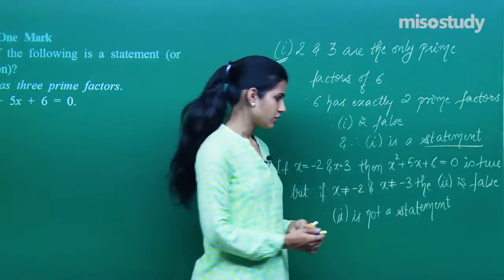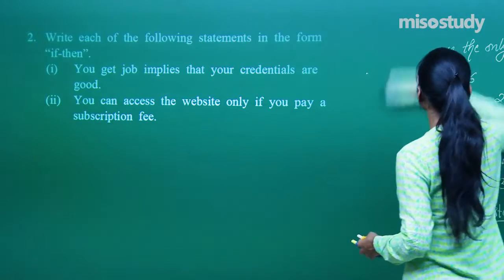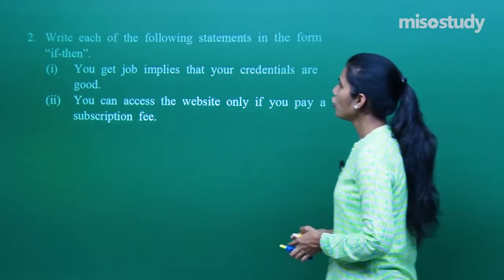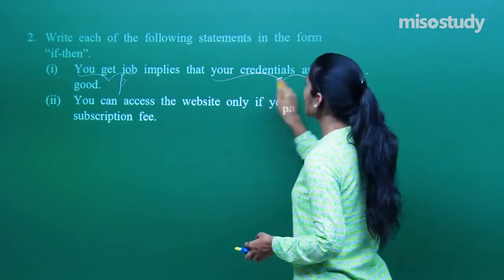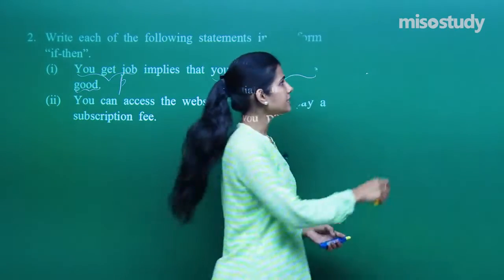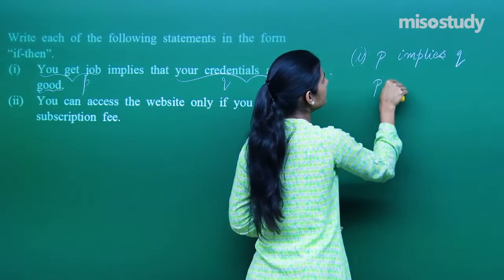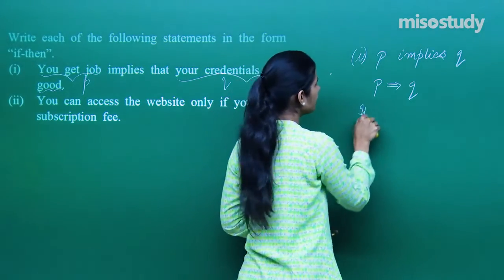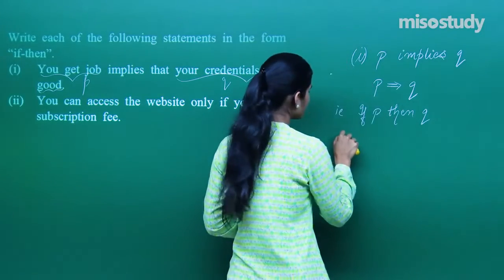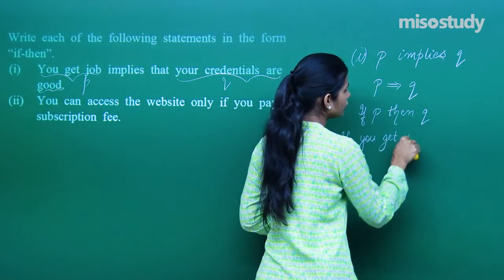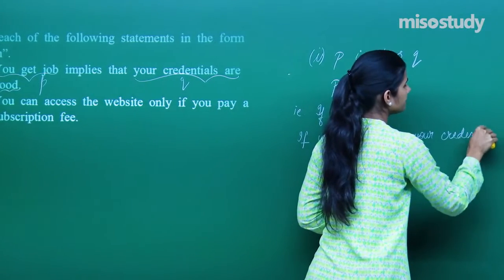That is how you describe the reason and declare the conclusion. Moving to the next question: write each of the following statements in the form of 'if-then.' If you get a job, that implies your credentials are good. Taking 'you get a job' as statement p and 'your credentials are good' as statement q, the sentence says p implies q, which is another name for 'if p then q.' So: if you get a job, then your credentials are good.